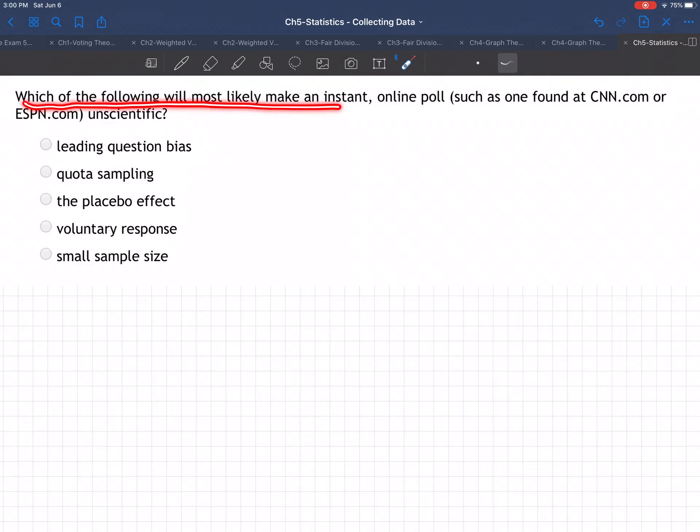Which of the following will most likely make an instant online poll, such as one found at CNN.com or ESPN.com, unscientific? What makes that happen?